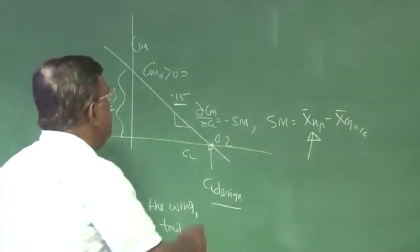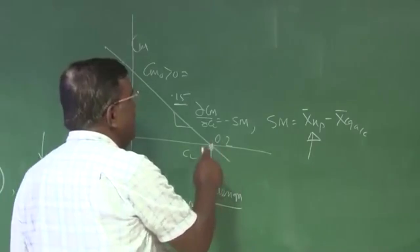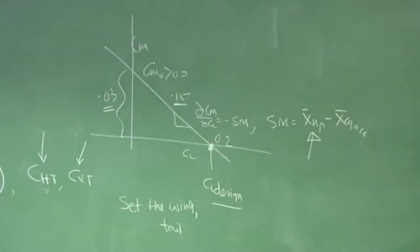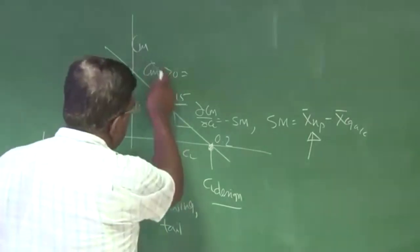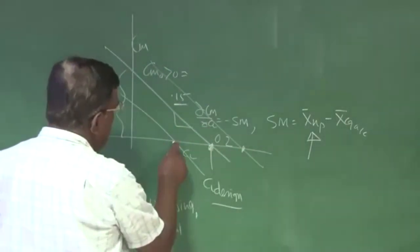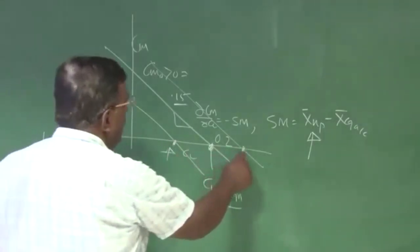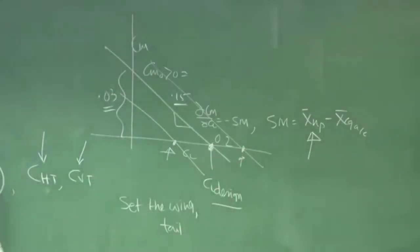The next question is: suppose this is the CL at which we have designed, but it is not all the time we will be flying at this CL. So I need to fly sometimes at this CL, sometimes perhaps at a higher speed, at a lower speed. How do I do that?